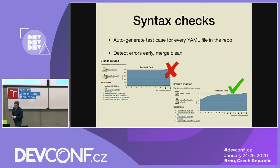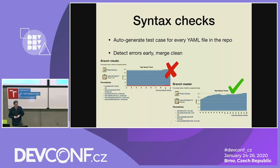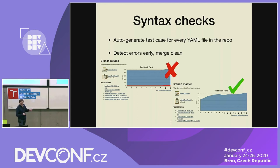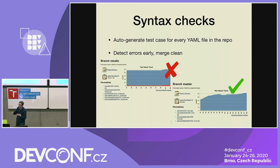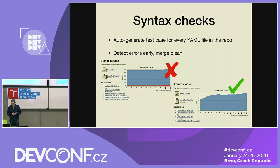Speaking of test results — you probably know those test result graphs that show you: this commit introduced some errors, and then the next commit hopefully removed them. We can make mistakes on the development branches, but hopefully on the master branch this is clean. You can also see this is quite a high number of test cases. Basically, for all host vars and group vars files, we programmatically create a test case — the test case is called the same as the host vars file. Then we do a syntax check on it, because since it's just static configuration data, there's not much else we can do.